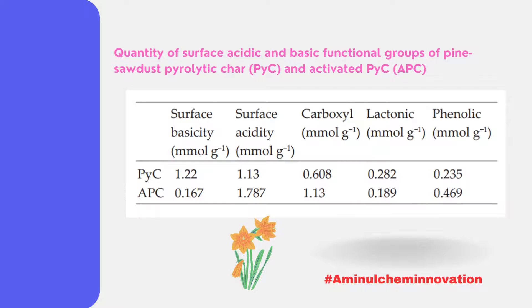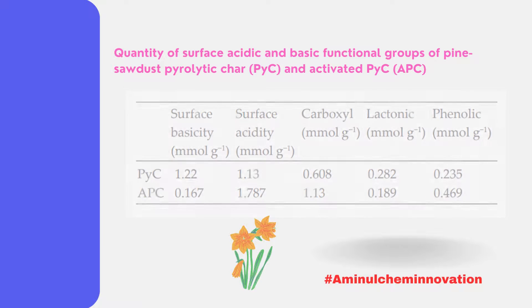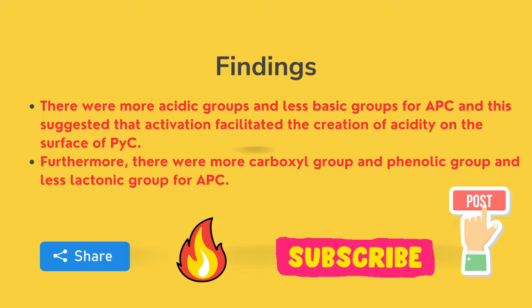Here I have shown literature values for a titration of pine sawdust, pyrolytic char, and activated pyrolytic char. The first one is pyrolytic char and the second one is activated char. These show surface basicity, surface acidity, carboxyl, lactone, and phenolic groups.